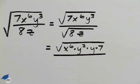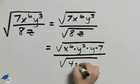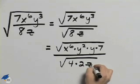In the bottom we have 8 which is 4 times 2. So I can rewrite this as 4 times 2 times z.